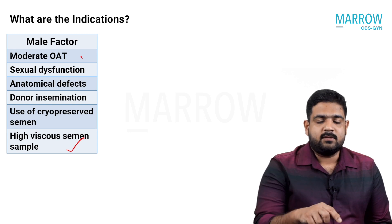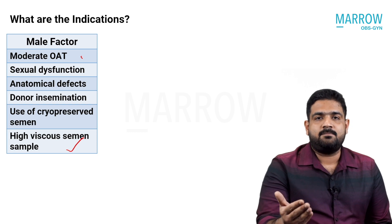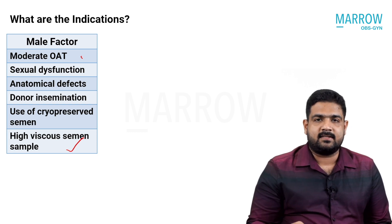There is one more indication: donor insemination, in which another man's sperm is used for IUI. This will be discussed in the next slide.